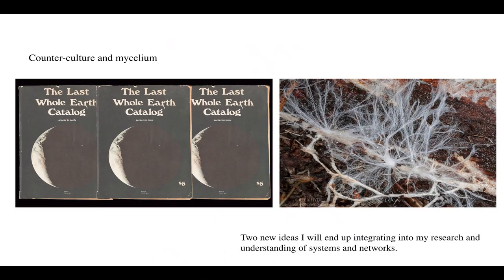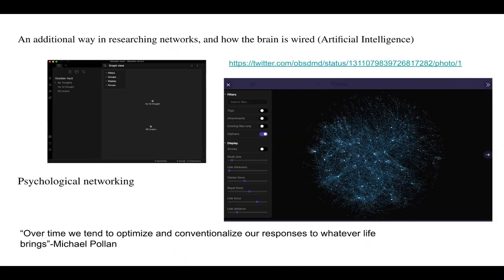Here's some more on the last whole Earth Catalog, as well as mycelium as another understanding of a system of networks — an underground system of networks. Here's an additional avenue of research I might explore: how the brain is wired, using an AI software called Obsidian, in which I'll look into psychological networking.